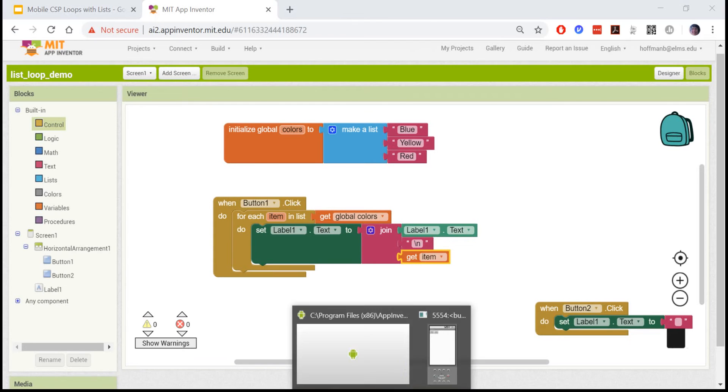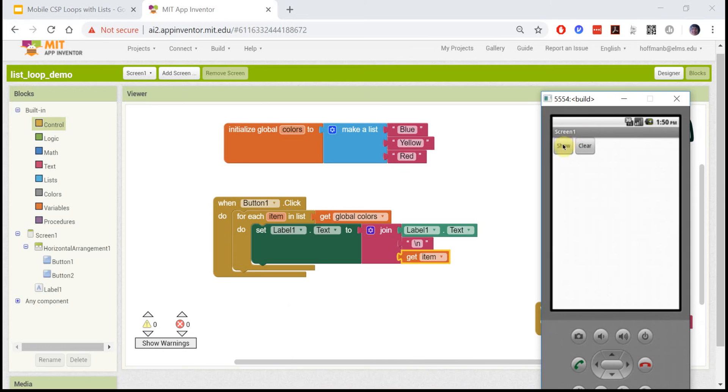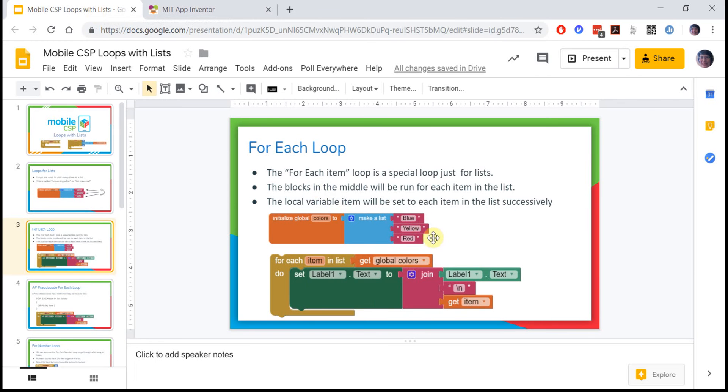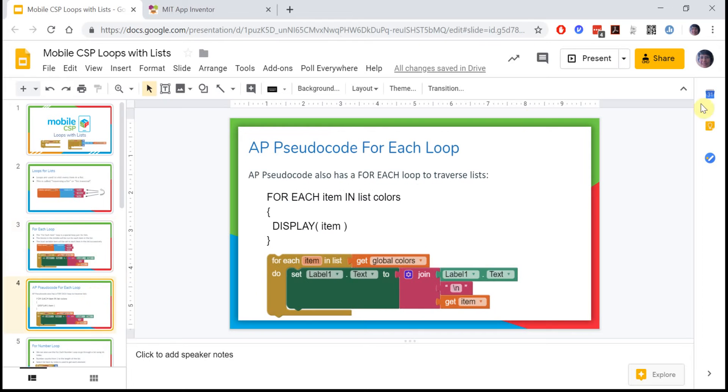If I run this, here's my show button. It just traverses the list and puts blue, and then yellow, and then red into the label. Each time through this loop, this item variable becomes one of these items in the list, starting from the first item all the way to the end.